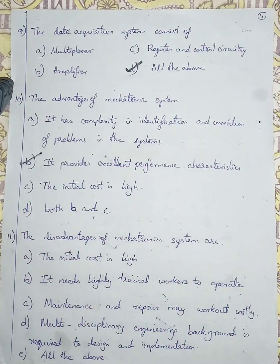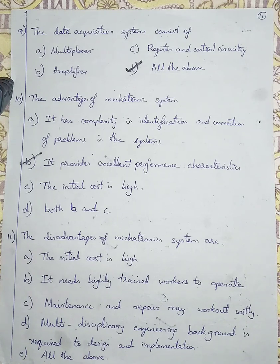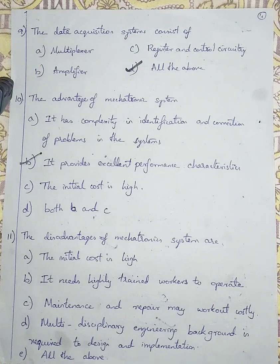Question number 11: The disadvantages of mechatronic systems are. Option A is initial cost is high. Option B is need for highly trained workers to operate. Option C is maintenance and repair costs may work out costly. Option D is multi-disciplinary engineering background is required for design and implementation. Option E is all the above.